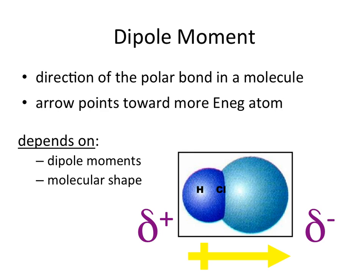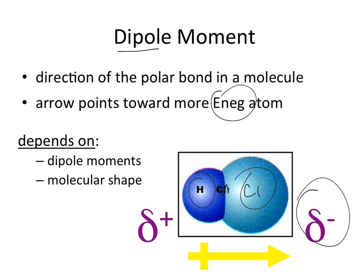Molecular polarity is dictated by dipole moments that occur between bonds in the molecule, as well as the overall shape and orientation of those bonds. As a quick review of dipole moments: for HCl, we look at the differences in electronegativity between atoms. Chlorine is more electronegative, so it has more electron density and a partially negative charge, while hydrogen has less electron density and a partial positive charge. This difference creates a dipole moment, represented by an arrow — the positive end at the partially positive side, and the tip pointing toward the partially negative portion.